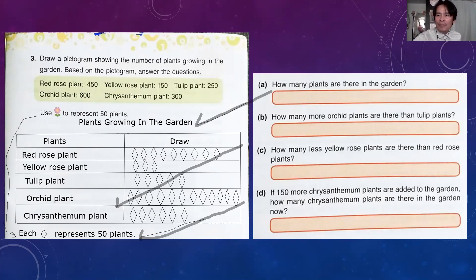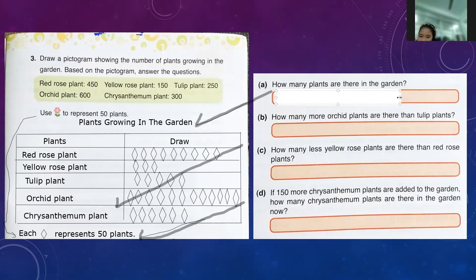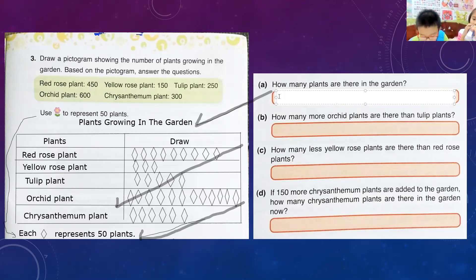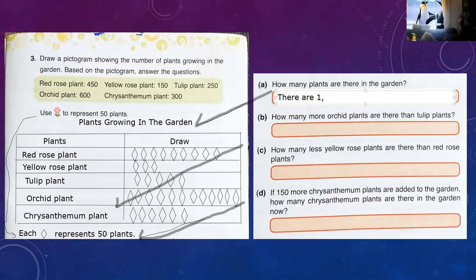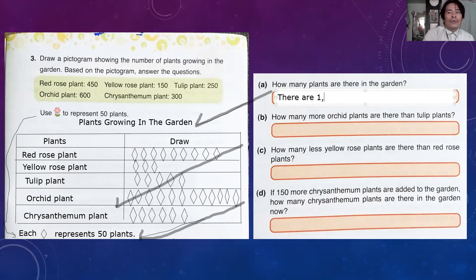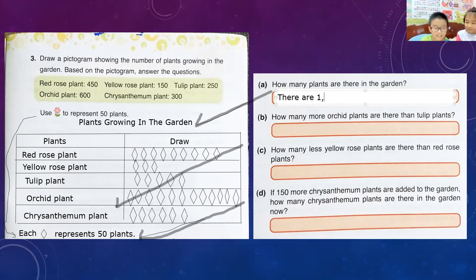Now, MK, you have the answer for letter A: how many plants are there in the garden? MK answers: there are 1,750 plants in the garden. Do you agree with MK? Yes — that's right!